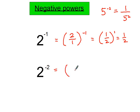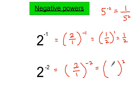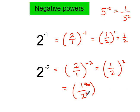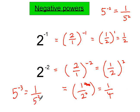Applying the same idea: write the whole number 2 as a fraction over 1, change the power to a positive, find the reciprocal to get 1 over 2, and raise to the power of 2 — giving 1 over 4. Once you get used to these, you can quickly write things like 1 over 5 to the power of 3. That's negative powers covered.